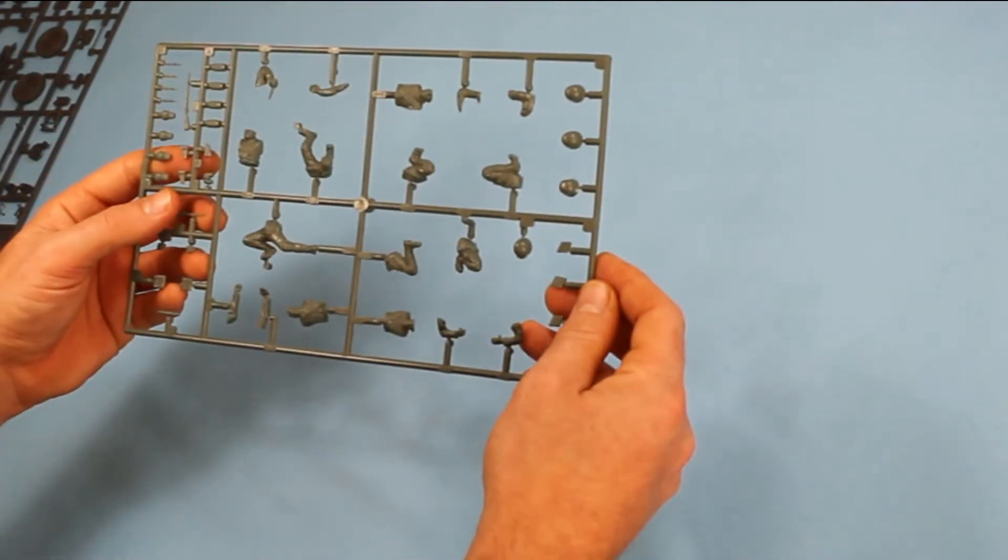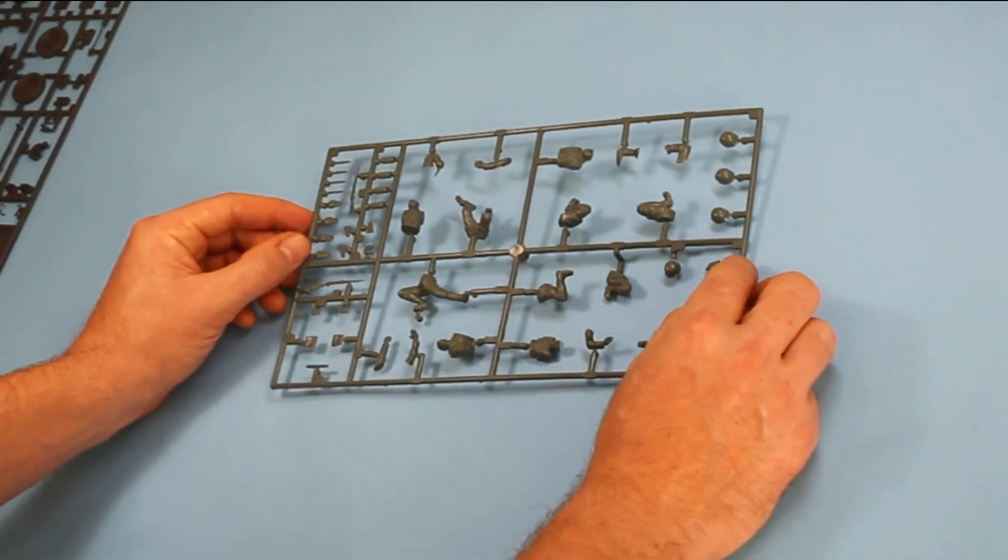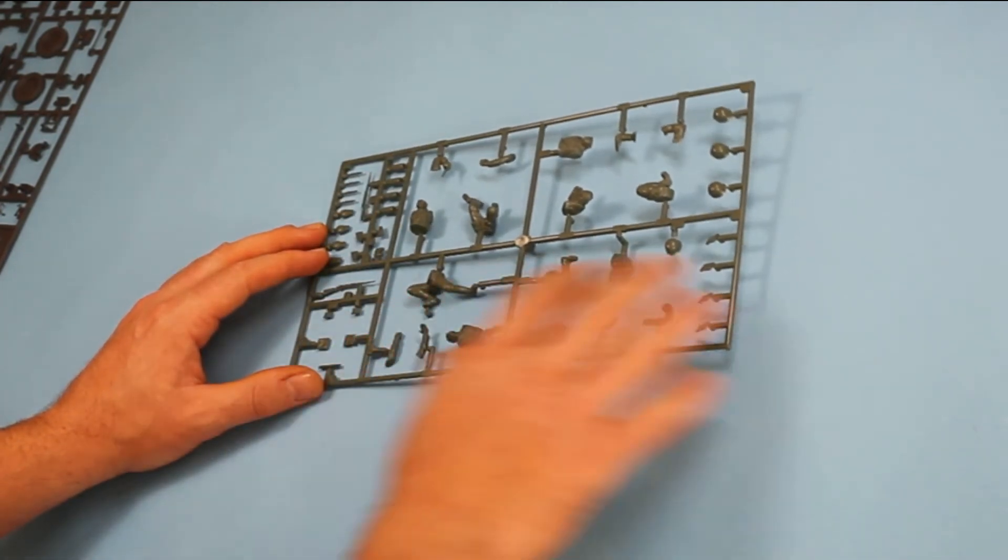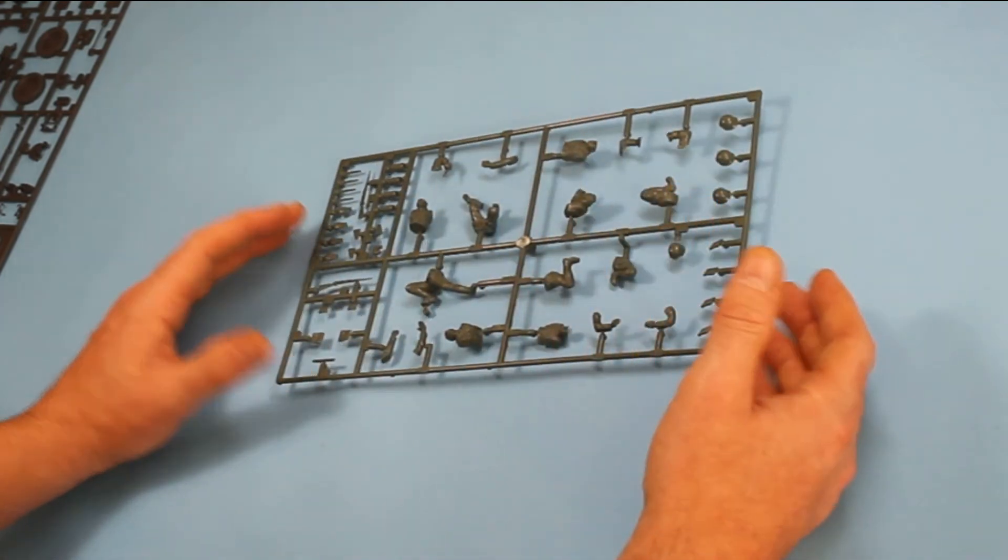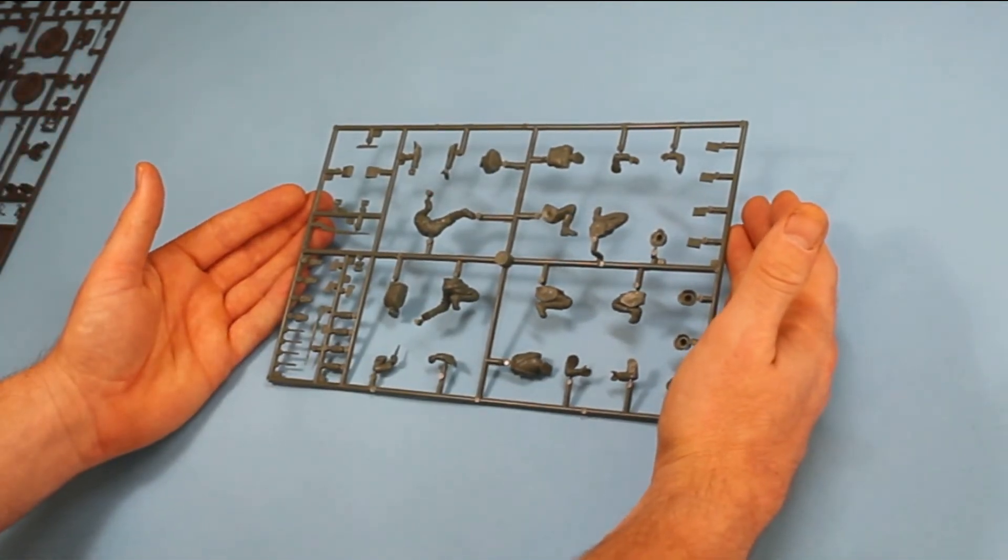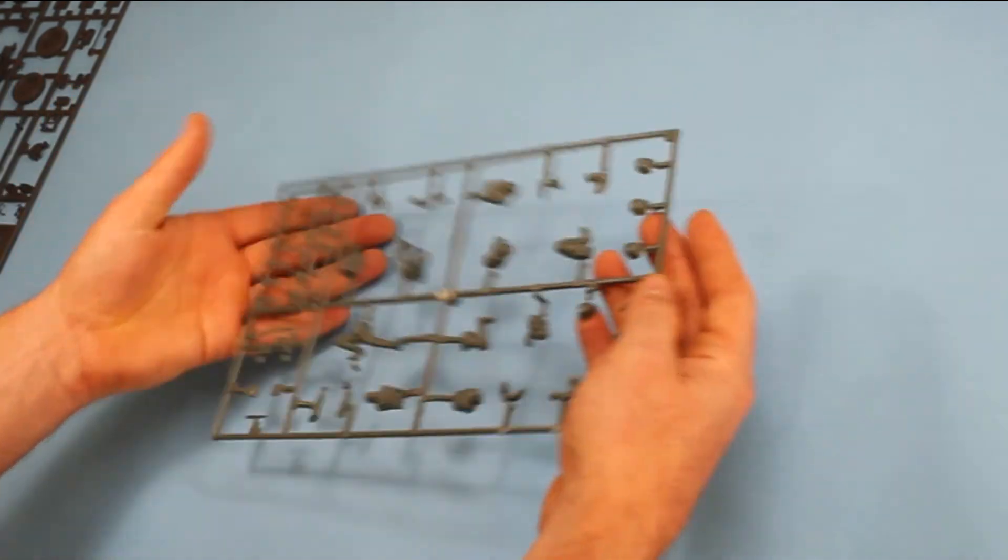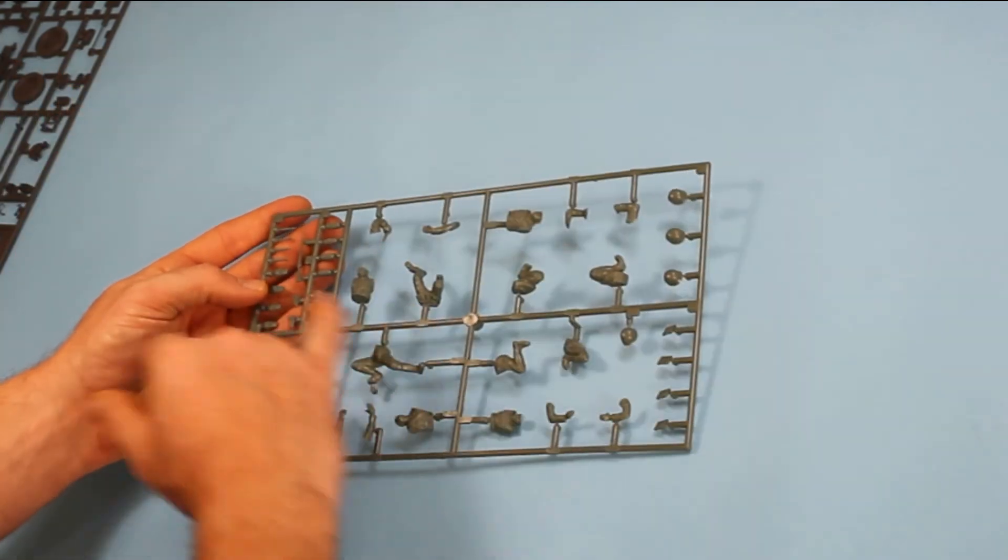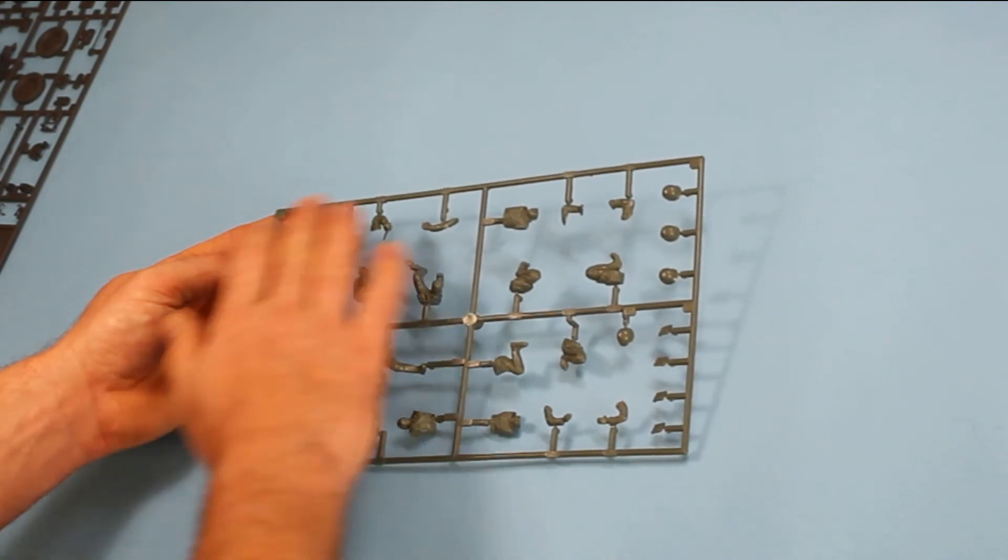Some of the poses are a bit unnatural and some of the detail is a bit blurred. But again, for its age, it's very good. And unless you're really picky, you should be able to get these looking good with a really nice paint finish. You've got all the parts there to put the figures together. And the helmets are separate, so there are some options there to change some things up.